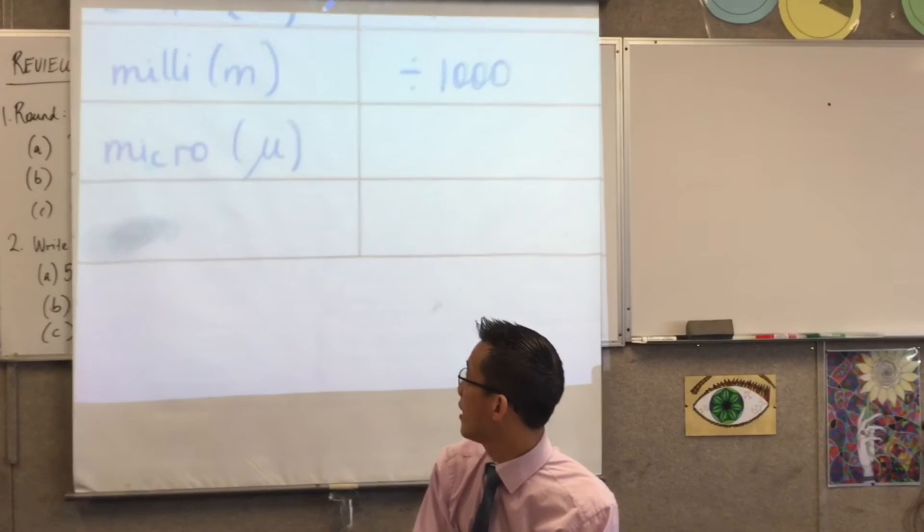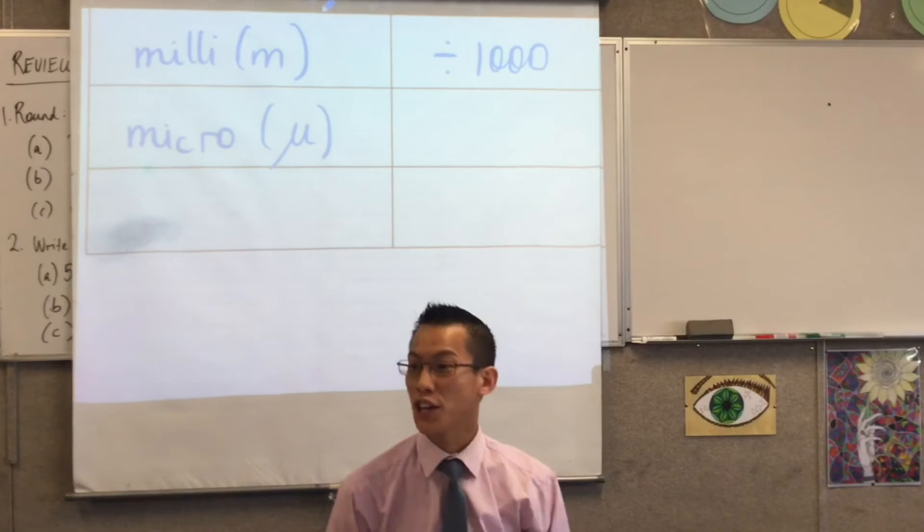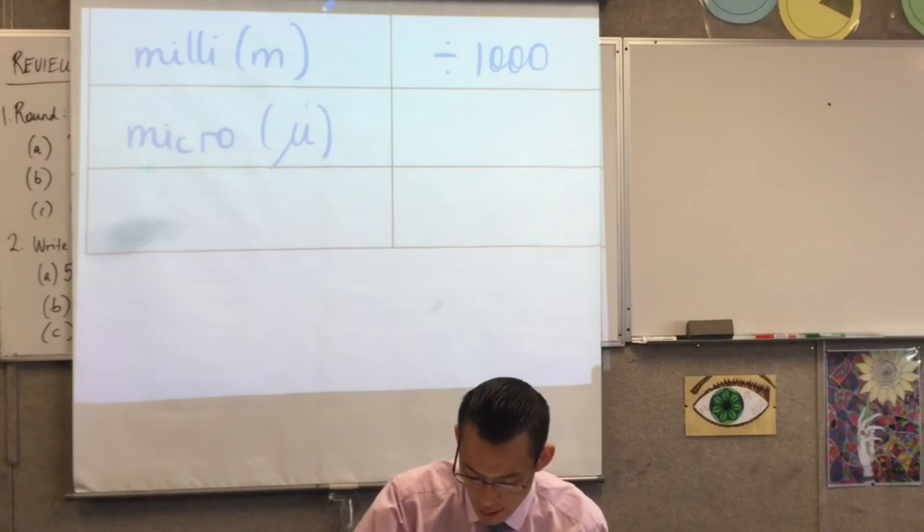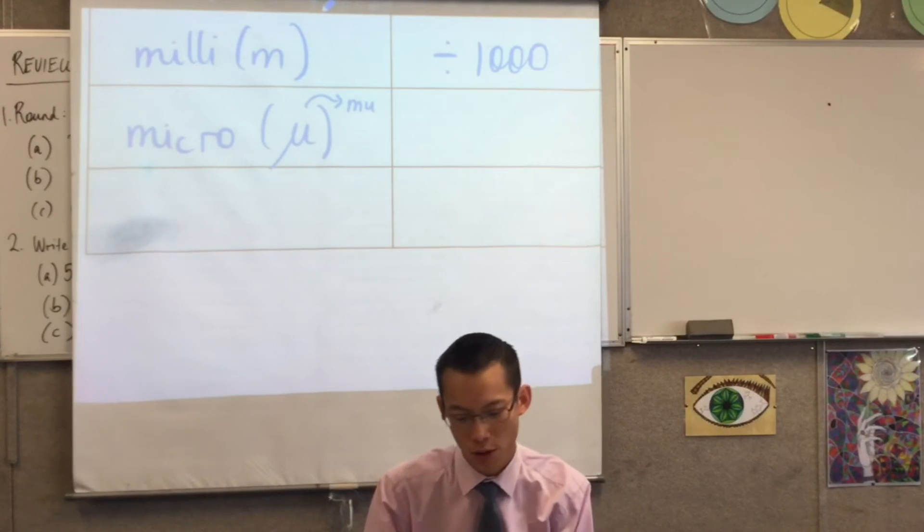So, that character there, it's like a U with a tail on the front. If you're curious, it's actually the Greek letter mu, as it's the equivalent Greek for M. So, that's why we use it.